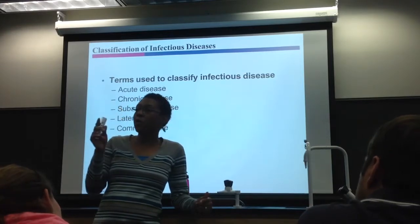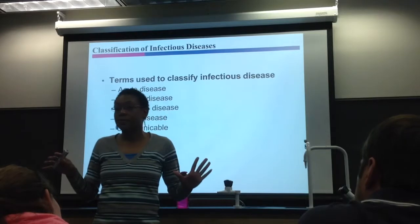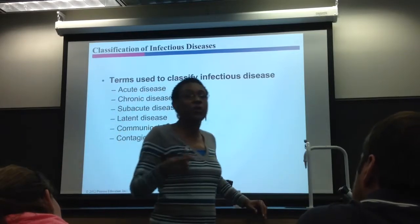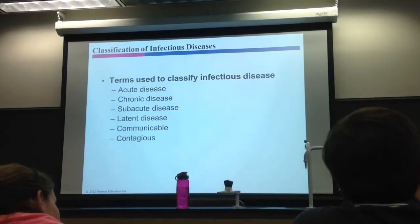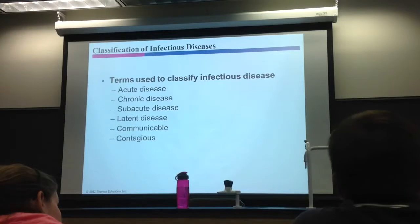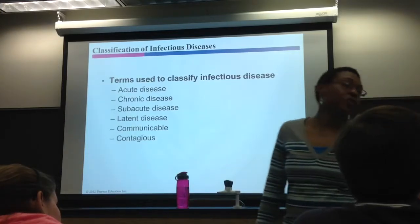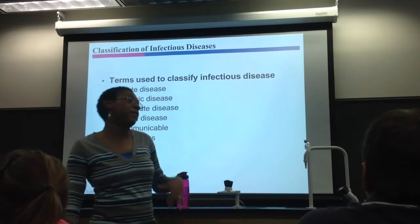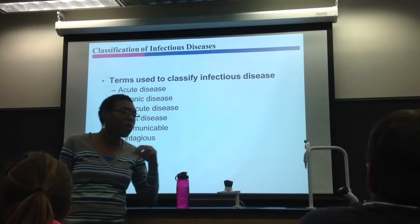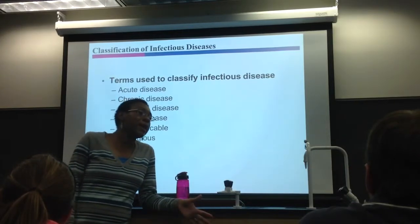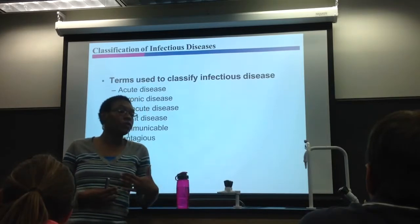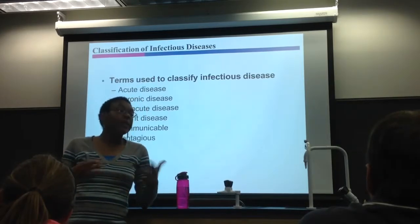Herpes has two forms: cold sores are herpes simplex 1, and herpes simplex 2. If you have cold sores, they come and go — when you don't have a cold sore, the virus is inactive and latent but still present. Triggers like stress or having another illness can activate the virus, because your immune system is already occupied, allowing herpes to be activated.